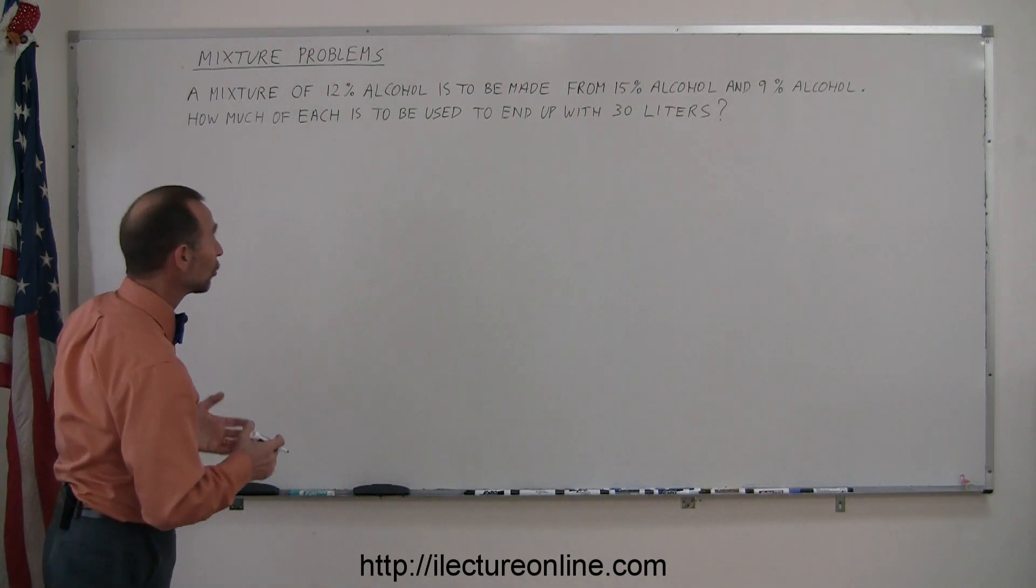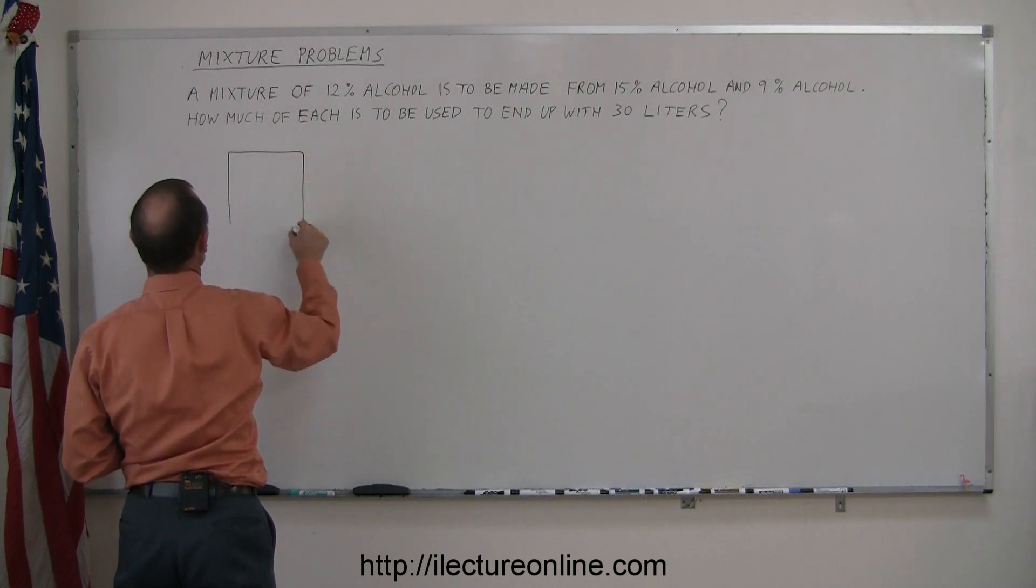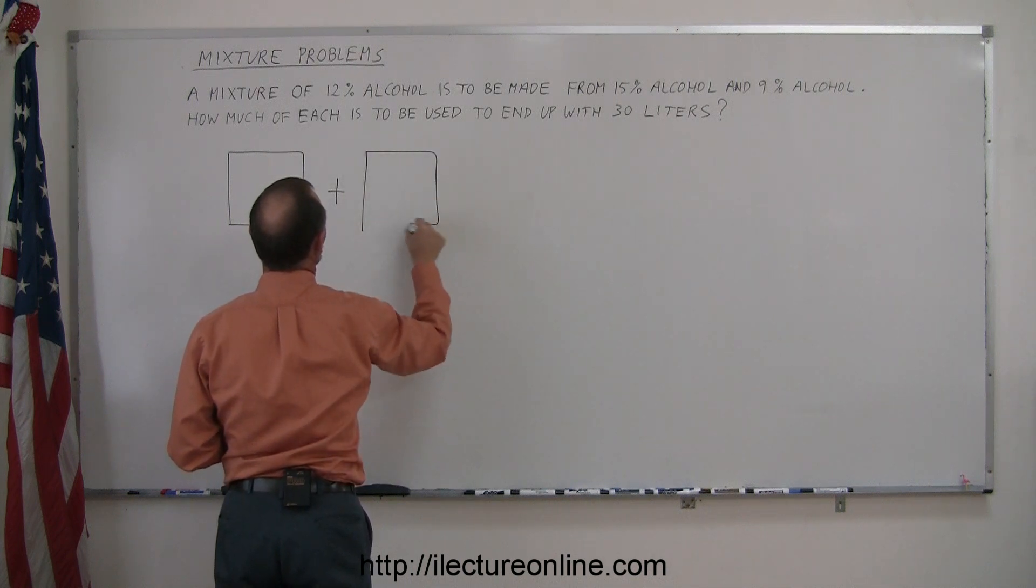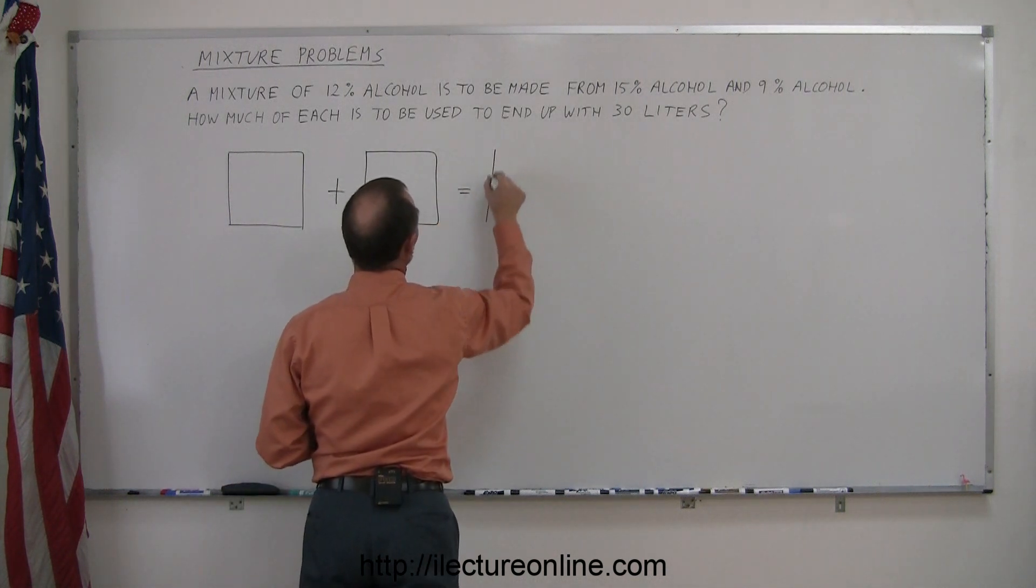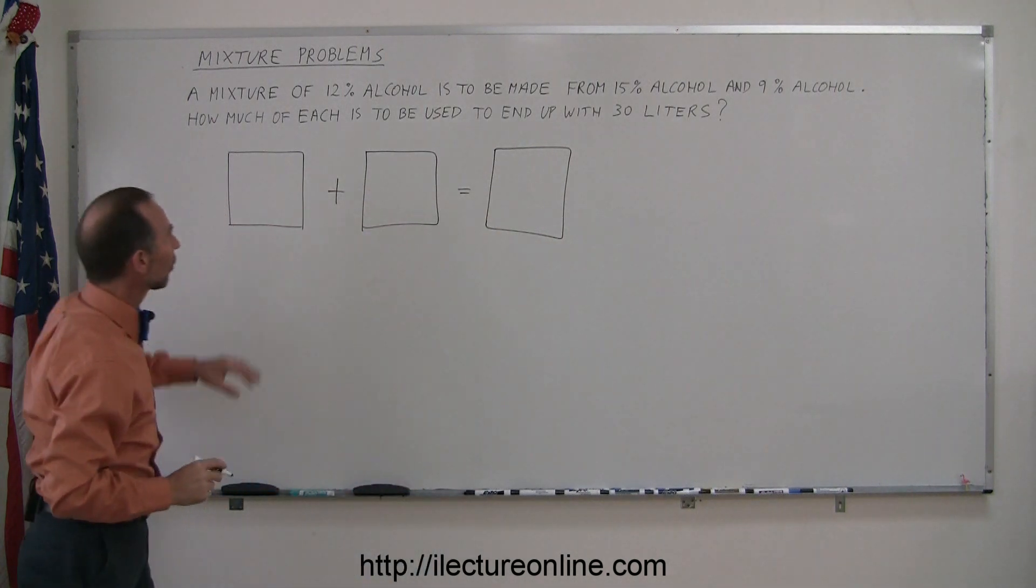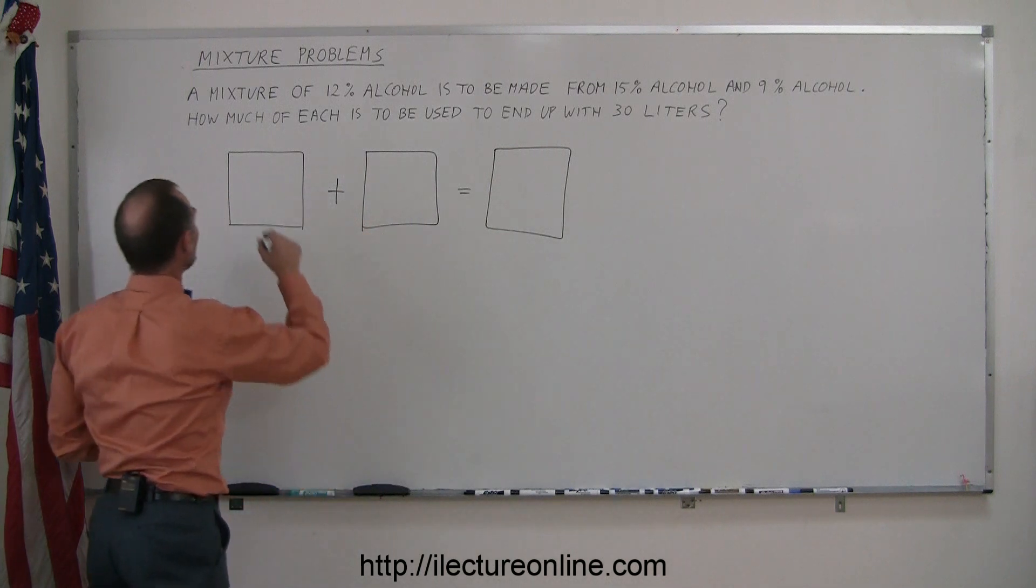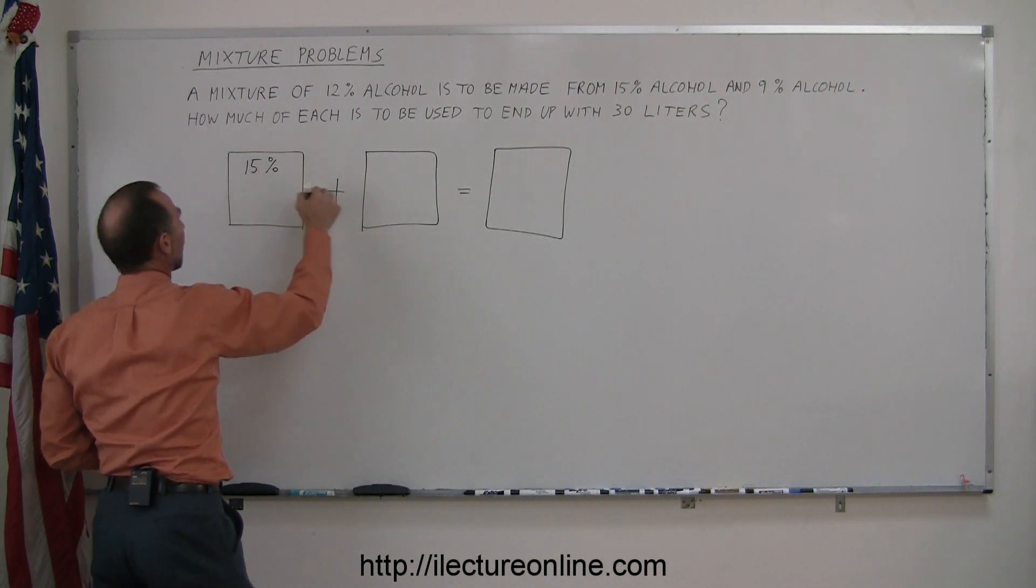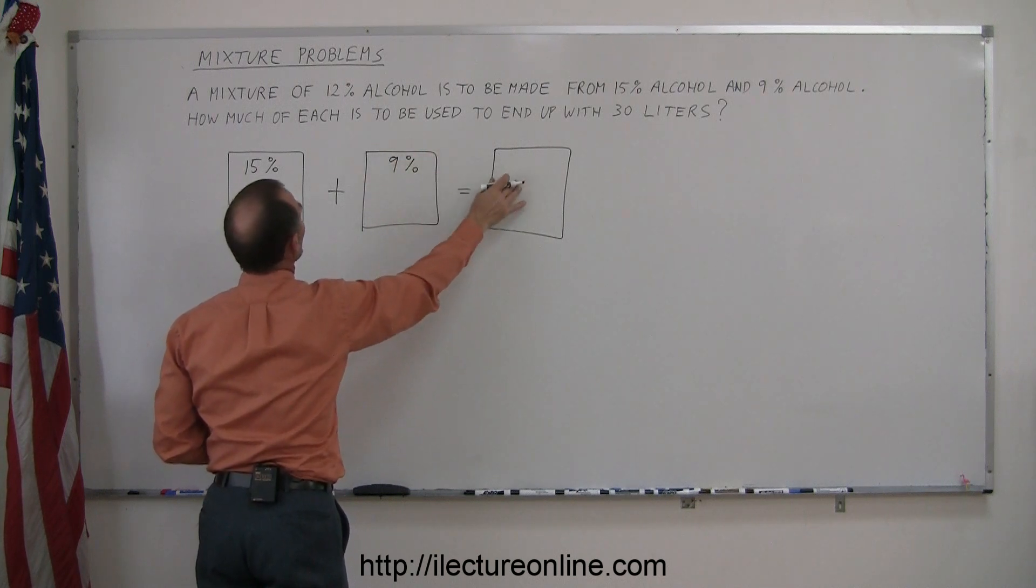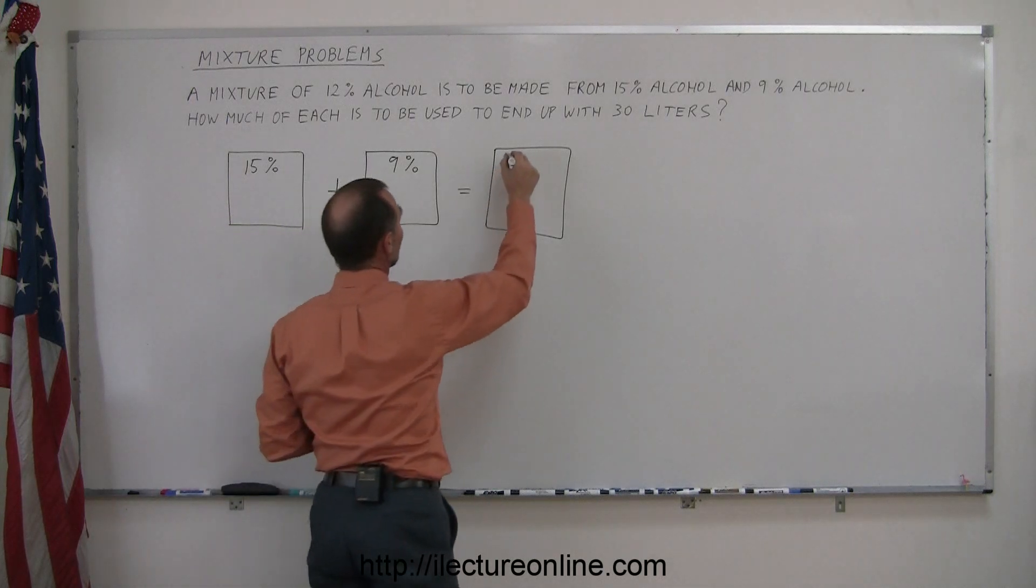The best way to do a problem like this is to graphically represent it. So let's draw one box plus another box equals a third box, and each of these boxes represents the solution. Let this represent the 15% alcohol, let this represent the 9% alcohol, and let this represent what you eventually end up with, a solution of 12% alcohol.